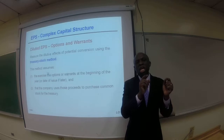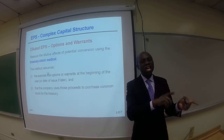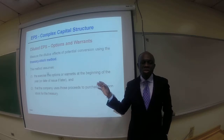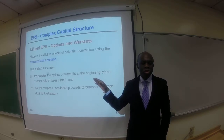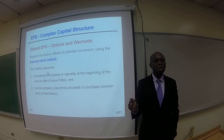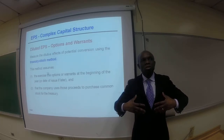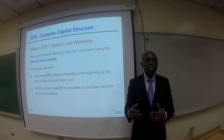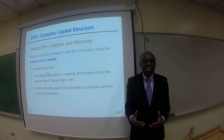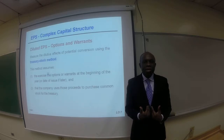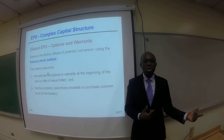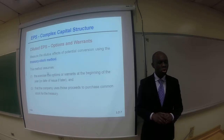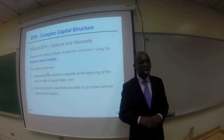We use the if-converted method, meaning if those bonds are converted, what would be the impact? But here, these comparable securities — options and warrants — are slightly different. Why? Because options and warrants give the right to the holder to purchase the company stock. So the difference is: when those option and warrant holders exercise their right, the company is going to receive some amount of dollars from them when they purchase the common stock. That is the key twist to diluted EPS in connection with options and warrants.